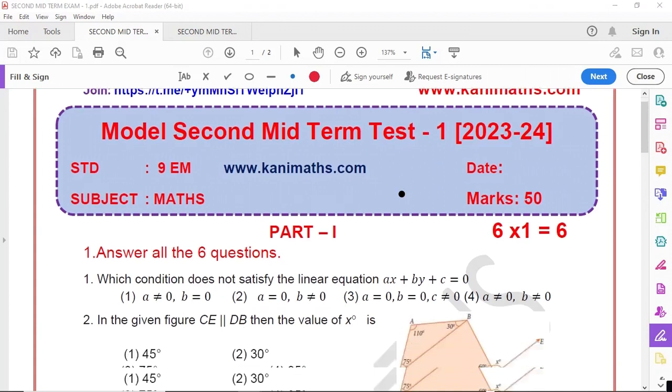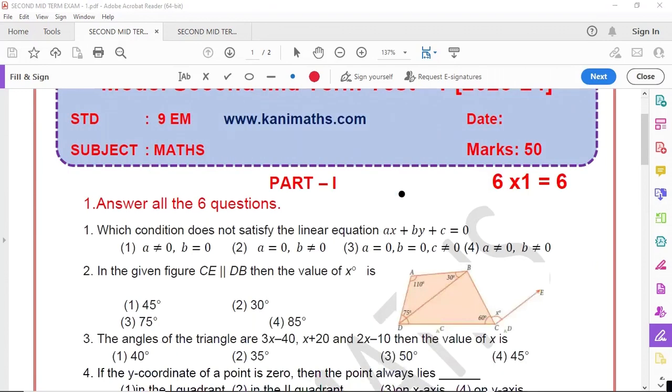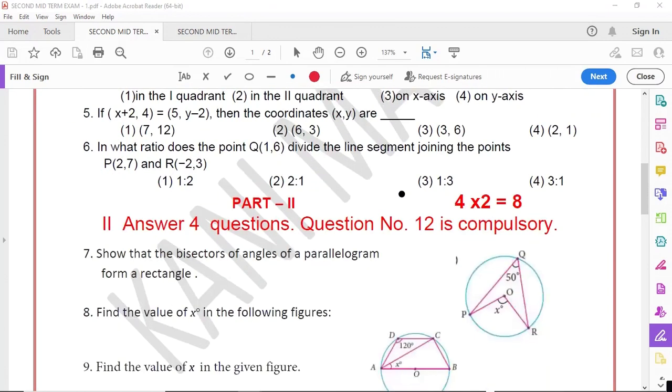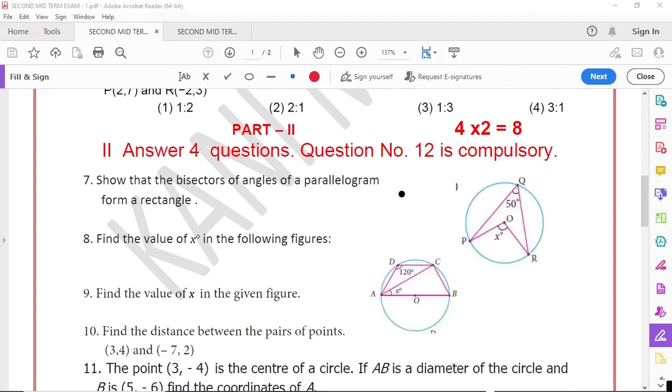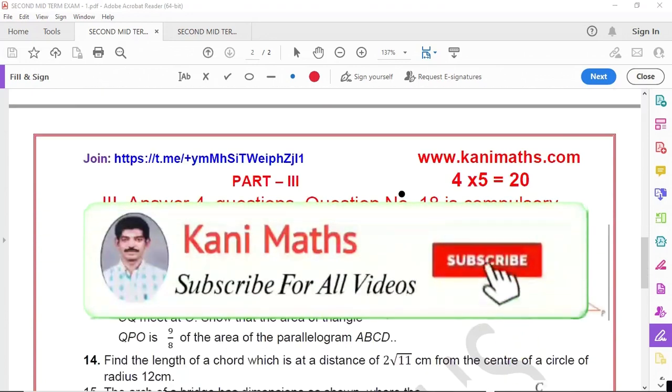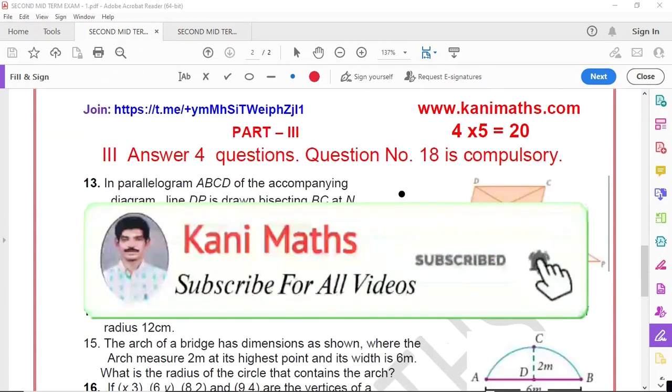Now let's look at the question. One mark questions are six, one into six equals six marks. Two mark questions are four. The twelfth question is compulsory. Two marks compulsory, six questions.